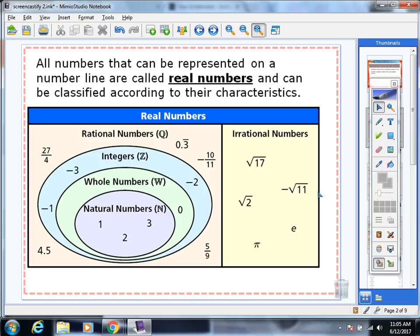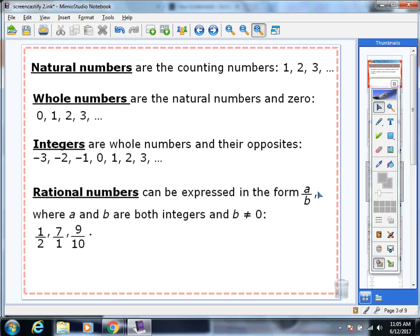Irrational numbers are square roots that we do not have a perfect square for. They are never-ending decimals such as pi. Here's a better explanation. The natural numbers are the counting numbers, 1, 2, 3, etc.